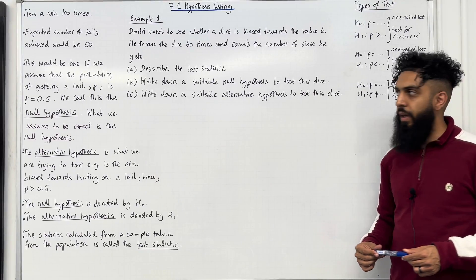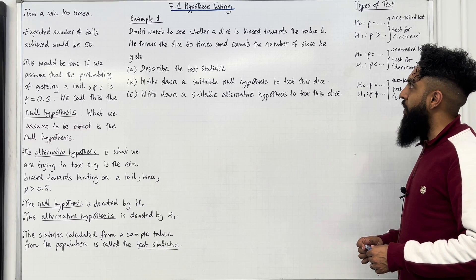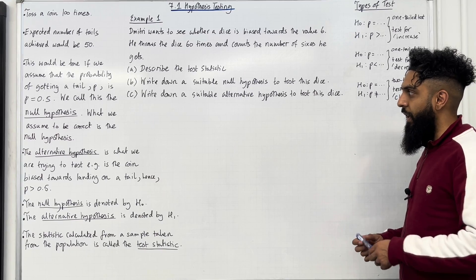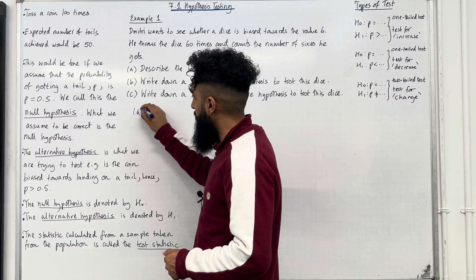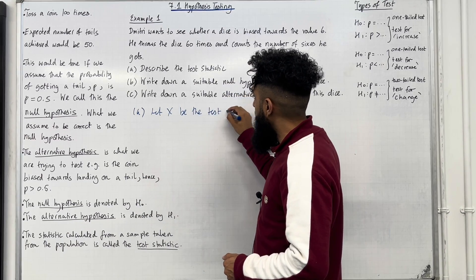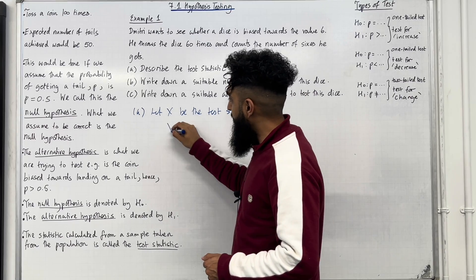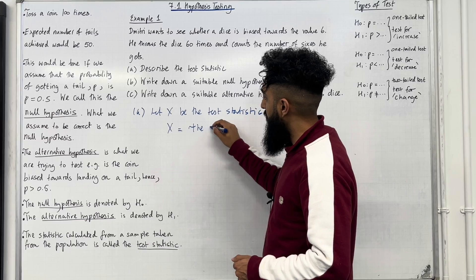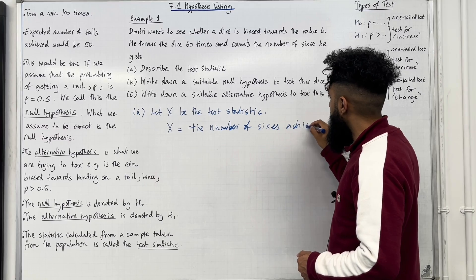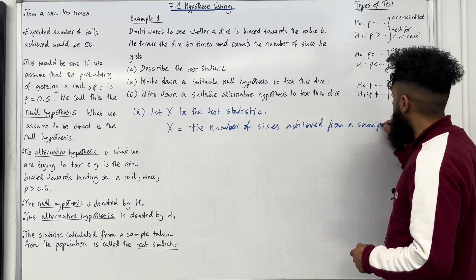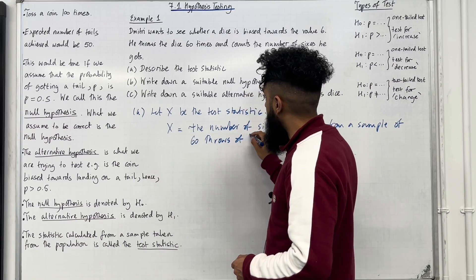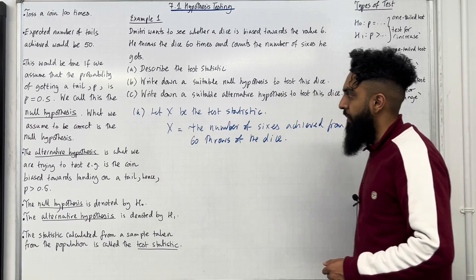Let's have a look at Example 1. Dimitri wants to see whether a dice is biased towards the value 6. He throws the dice 60 times and counts the number of sixes he gets. Part A: describe the test statistic. Let capital X be the test statistic. X equals the number of sixes achieved from a sample of 60 throws of the dice. That is the test statistic.